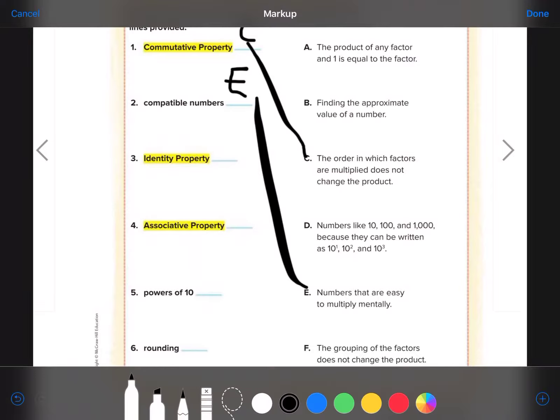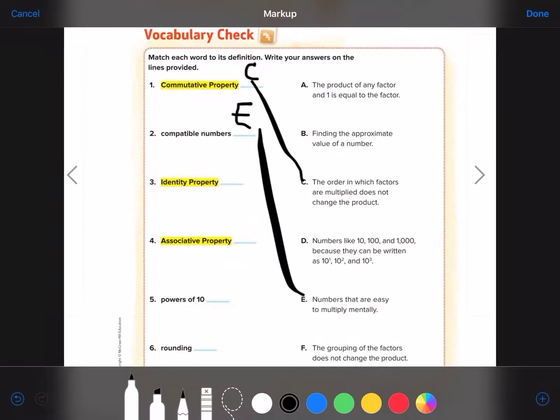Okay, identity property. Identity property is the product of any factor and 1.